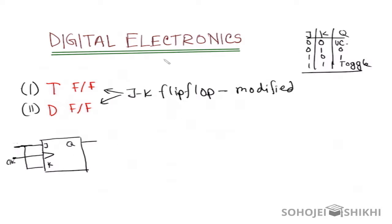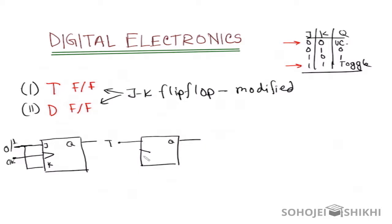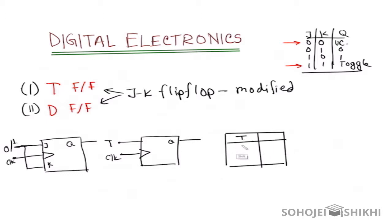After taking the input part, the whole truth table reduces. With input zero, the output is zero — unchanged. With input one, it toggles. This is the behavior we use to define the T flip-flop: T equals zero means unchanged, T equals one means toggle.